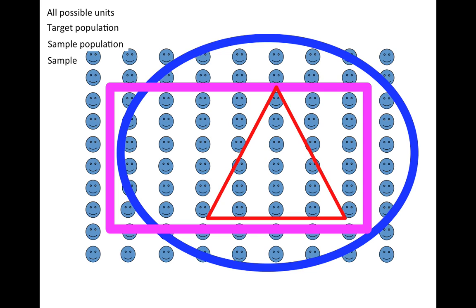And the units that actually end up in your study are called the sample. The sample is the set of units that you actually try to collect information on. By definition, the sample is a subset of the sample population.